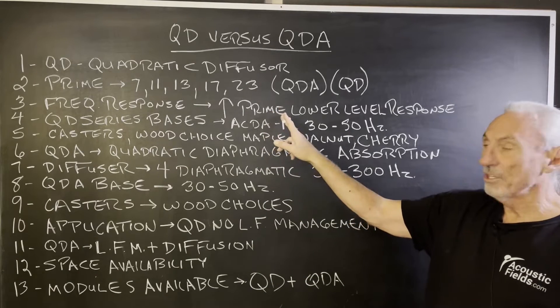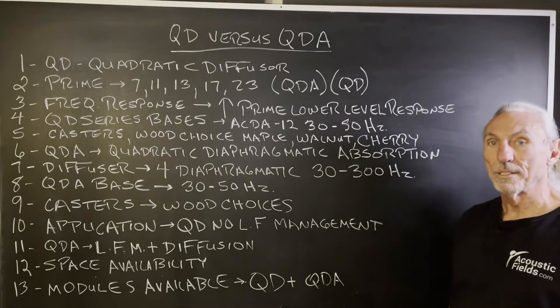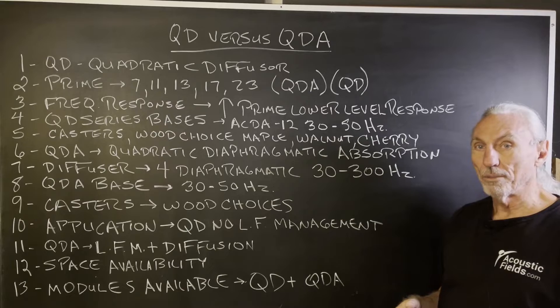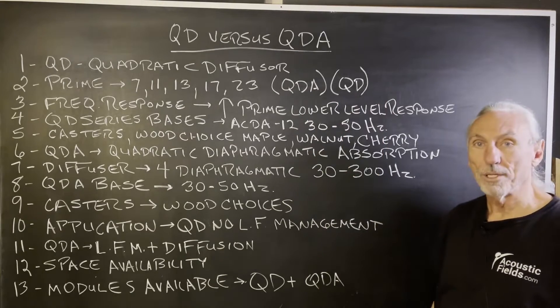The frequency response. Obviously, the higher the prime number, the lower the response. So you start at a lower frequency range. It doesn't vary drastically, but it can between a 7 and a 23.